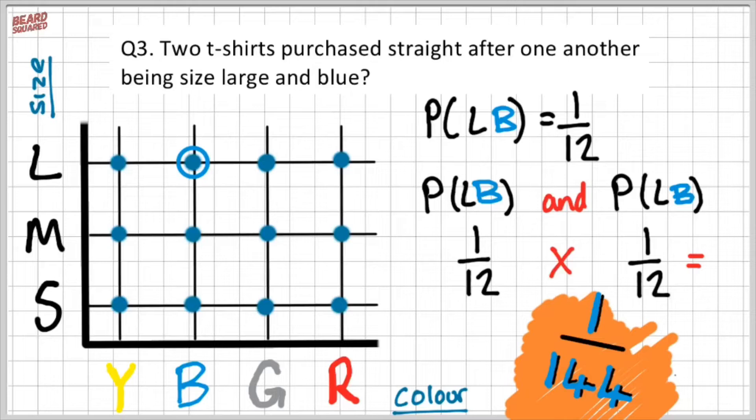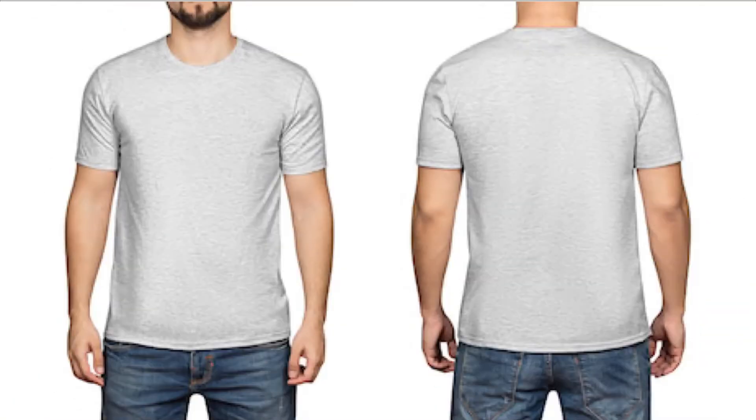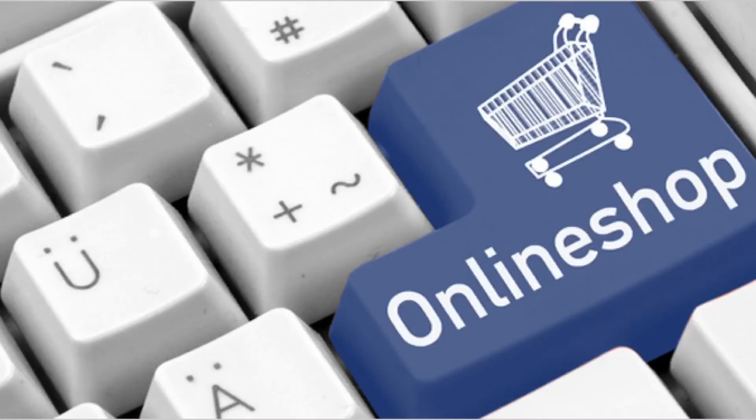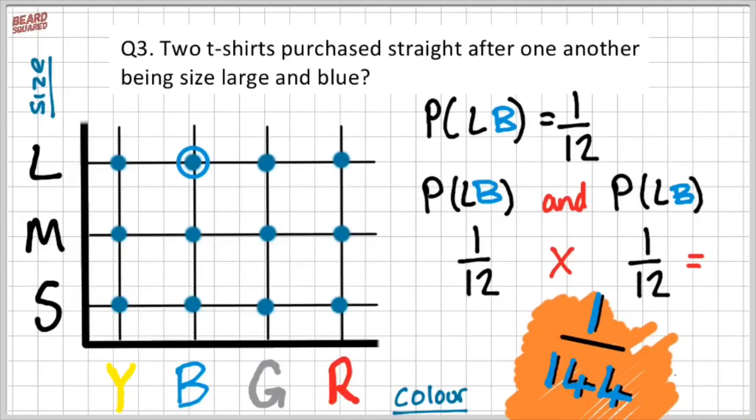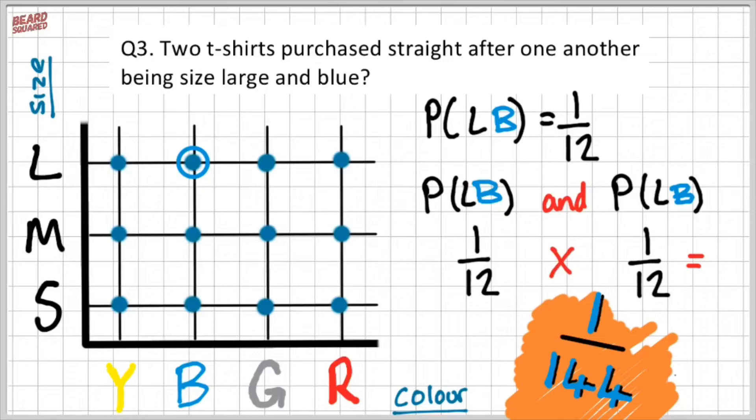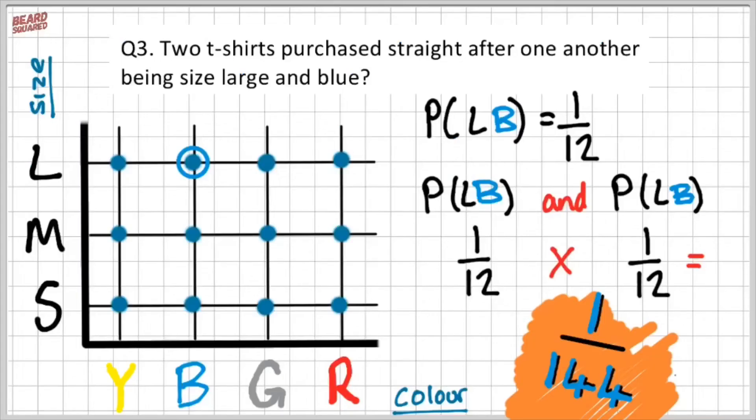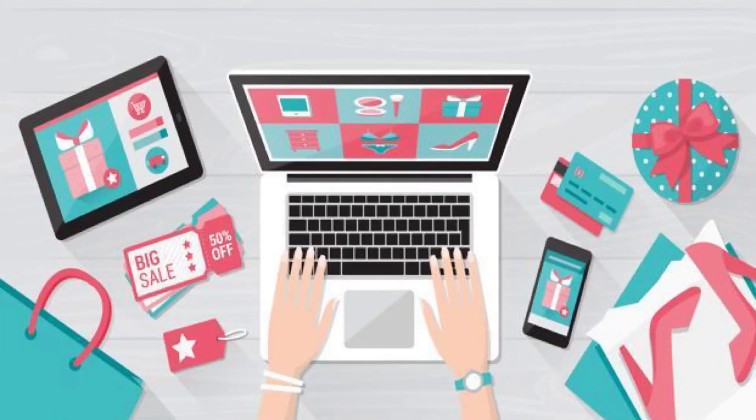Now remember, these are theoretical probabilities suggesting that Sally stocks her inventory full on her online merch store. We have a 1 out of 144 chance of getting two large blue t-shirts. So in real life, this can be very different because it really depends on what sizes and colors Sally stocks in her inventory for online merch store.